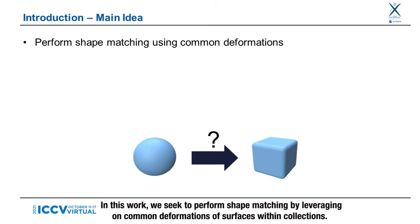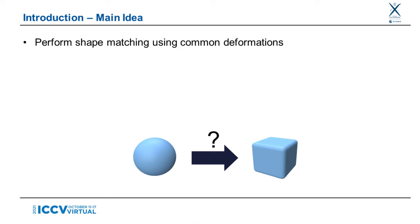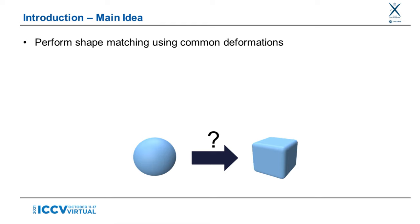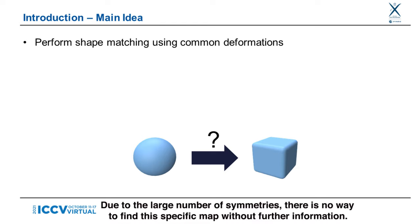In this work, we seek to perform shape matching by leveraging uncommon deformations of surfaces within collections. One goal is to obtain a specific pointwise map between a sphere and a cube as shown below. Due to the large number of symmetries, there is no way to find this specific map without further information.